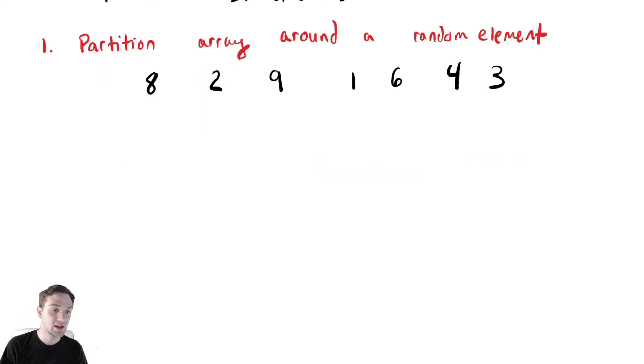We have the set of numbers. Let's say we partition it around six. I'm going to color six differently. We're going to partition around that. I'm just going to write a valid partition. So two and one and four and three are less than six, and eight and nine are greater than six. So six would end up here.